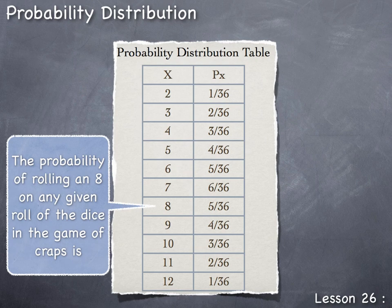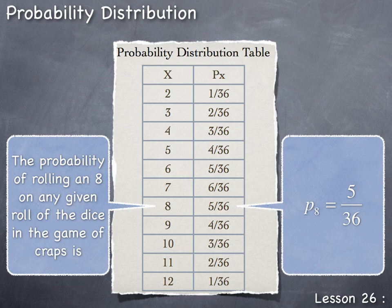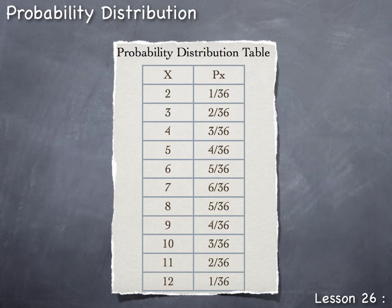The advantage of using probability distribution tables is that we can simply look up probabilities for particular outcomes without needing to use the basic rules or count all possible outcomes. The disadvantage is that these distributions only calculate probabilities for the specific situation for which they were designed — this table only calculates probabilities for rolling dice in craps and cannot calculate probabilities for any other purpose.